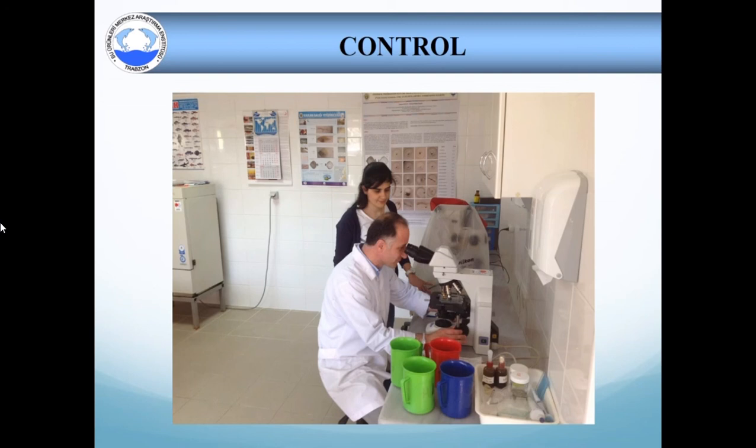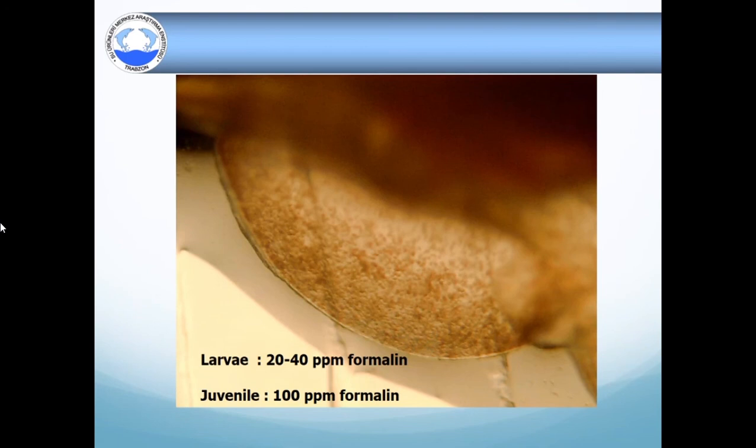If protozoa, mainly ciliates, are detected inside or outside of the body or the density of protozoa increased in the detritus, larvae is advised to medicate with 20 to 40 ppm formalin. And it is advised to medicate with 100 ppm formalin for juveniles by bathing of two hours immediately. This treatment should continue at least for three days to be effective.